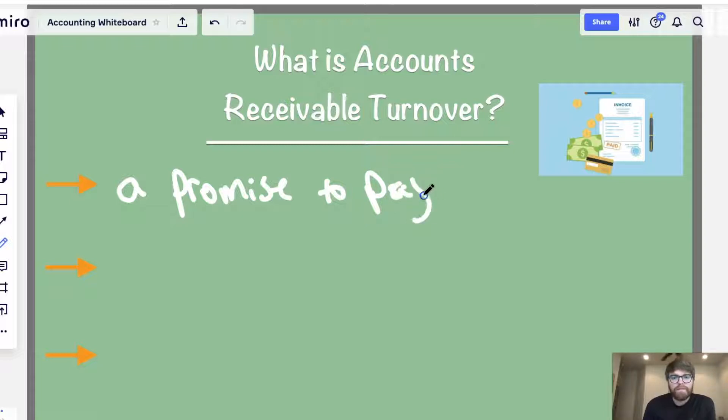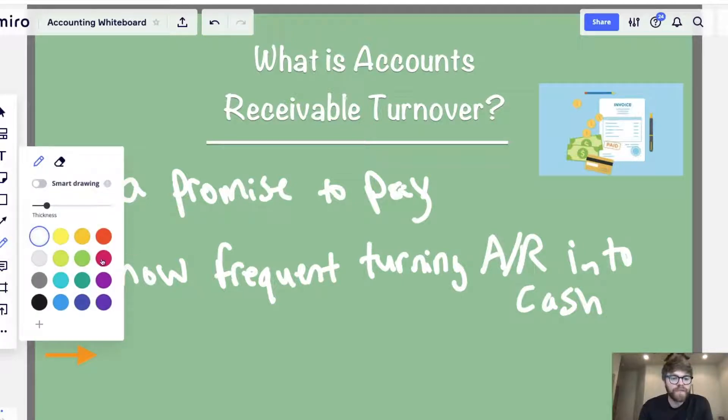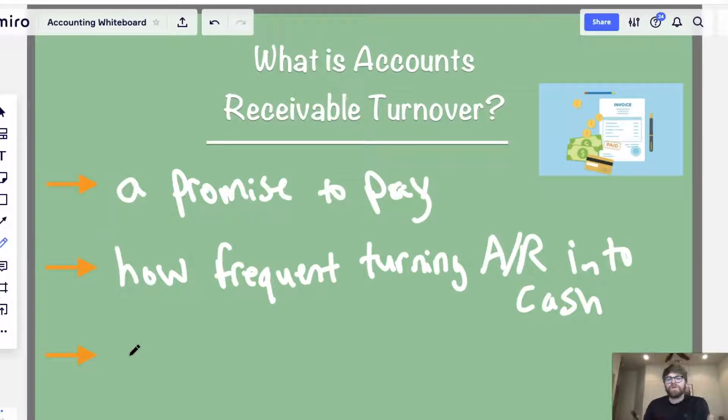So, you get that. But the question is, how often do you get that promise, that promise that someone's going to pay you, and then they finally pay you? That's kind of what we're trying to figure out here, is how often, or you can say how frequent, do you turn, so turning, accounts receivable, AR, into cash. So, how often do you collect on that cash? It's very important.